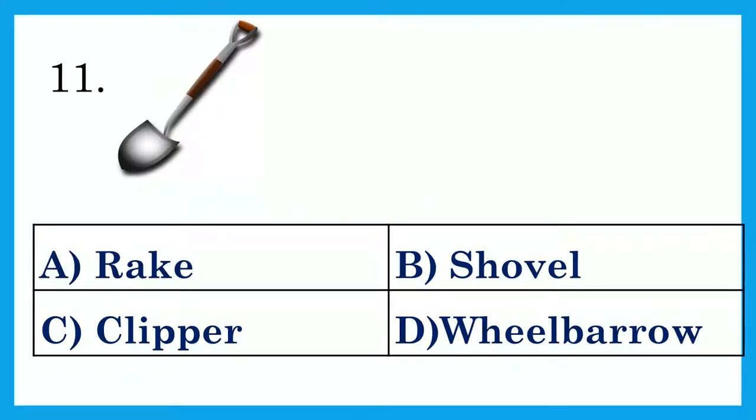Look at the picture and choose the correct word for it. Option A: Rake. Option B: Shovel. Option C: Clipper. Option D: Wheelbarrow. The answer is Option B: Shovel.